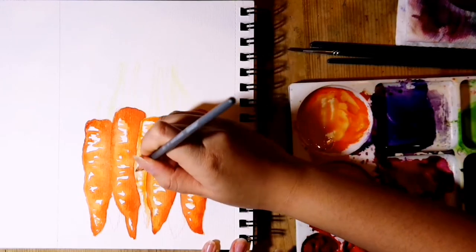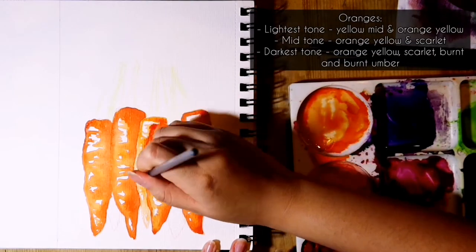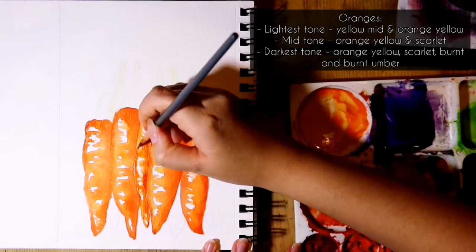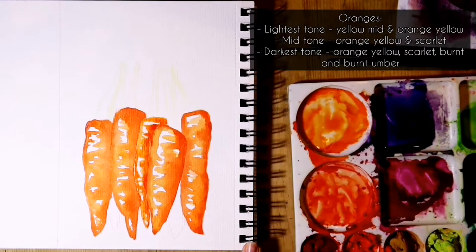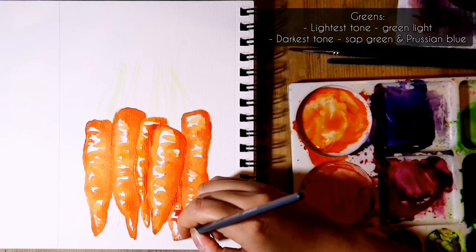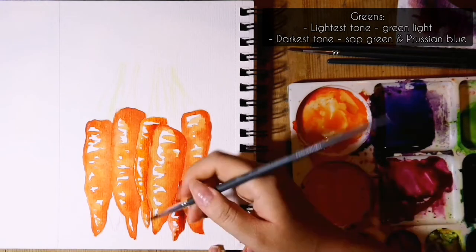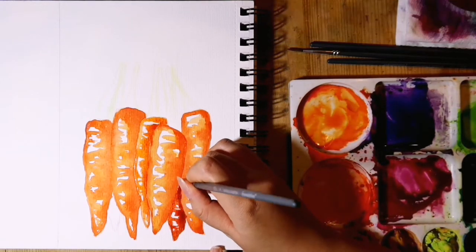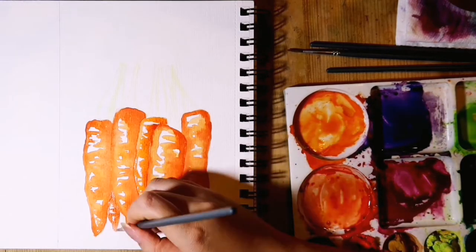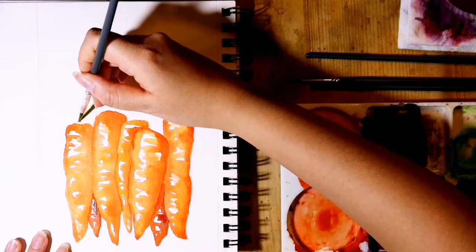For the wet on wet technique, make sure your page is not too wet and not to add too much water, as this will cause your paint to separate and spread and you will get that patchy cauliflower effect, which for the purposes of this painting I did not want. But when adding darker tones, I did dot the pigment around the general area of the shadows to give the carrots more variation and look less rigid and stiff.